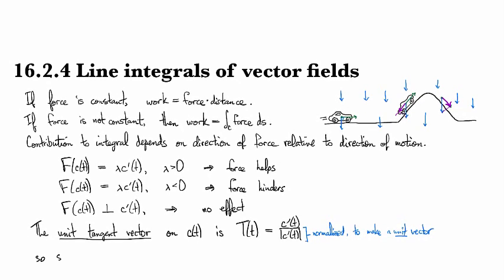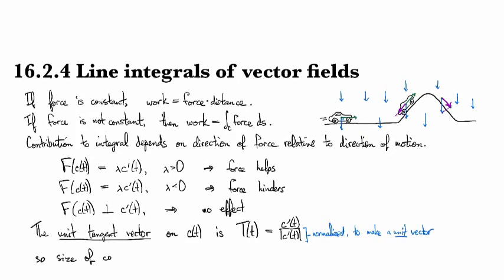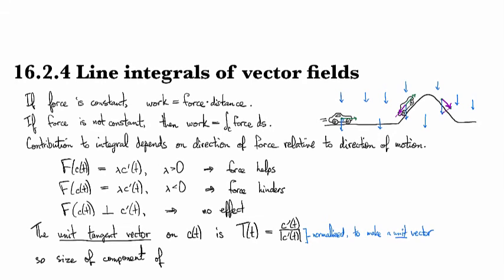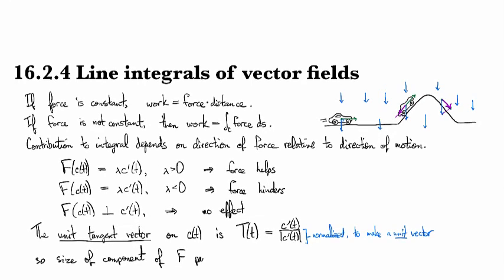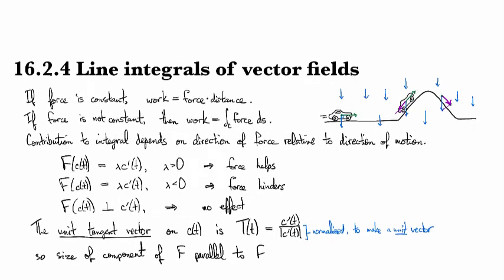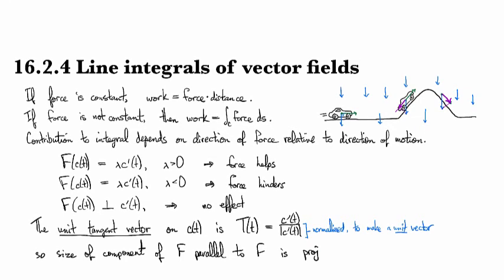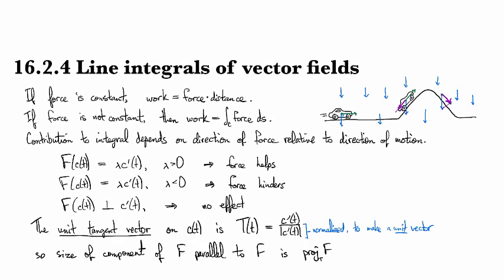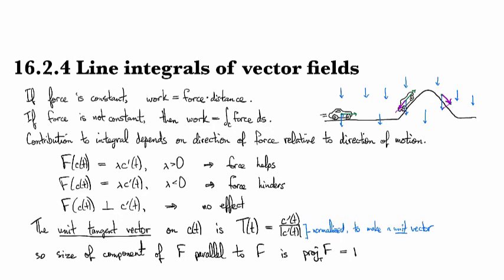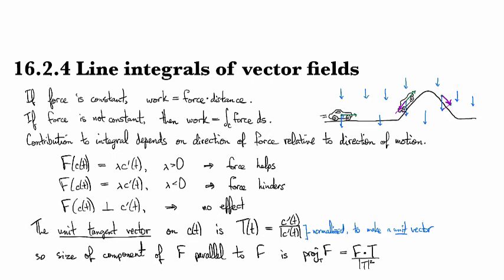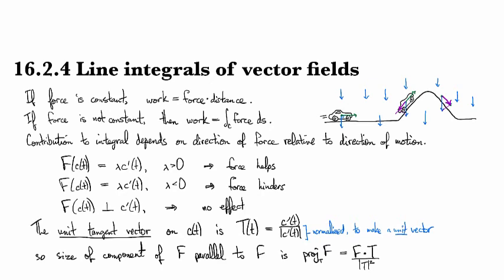So then the size of the component of the force which is parallel to F is the projection of F onto T which is just F dot T, and so this is why we use a unit vector because the full projection formula actually usually comes with this guy in the denominator. But since we've cooked it up to be a unit vector, that magnitude is just one and so the whole thing just cancels out.